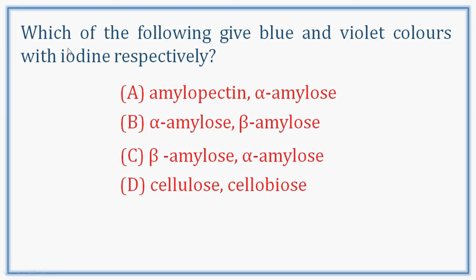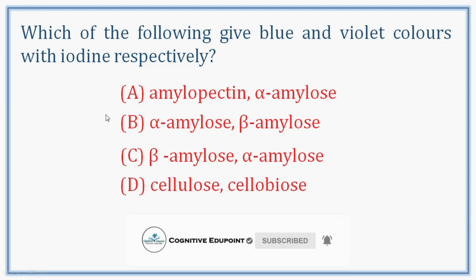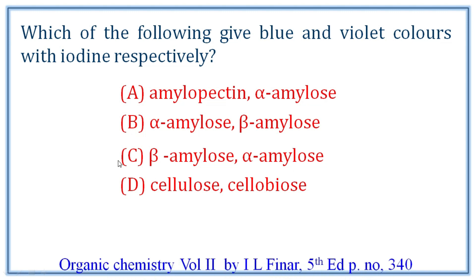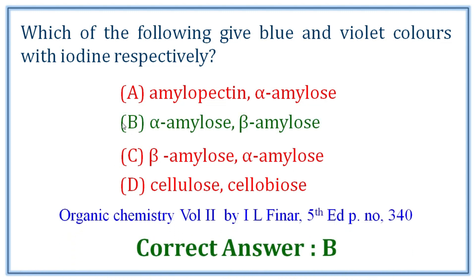Next question: which of the following gives blue and violet colors with iodine respectively? Starch has two fractions: amylose and amylopectin. Alpha amylose gives blue color with iodine, and beta amylose gives violet color with iodine. The correct answer is B.